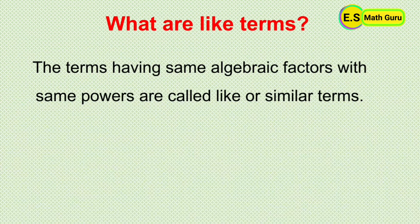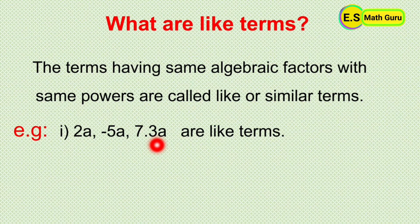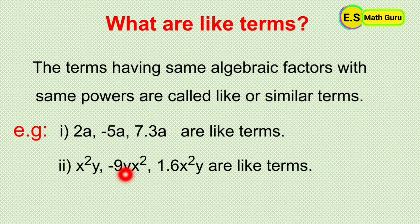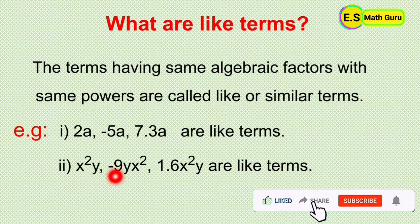What are like terms? The terms having same algebraic factors with same powers are called like terms or similar terms. For example, 2a, minus 5a, and 7.3a are like terms because these terms consist of the same algebraic factor with the same power, that is a to the power 1. Next, x squared y, minus 9yx squared, and 1.6x squared y are like terms.